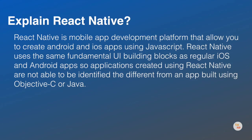Our first question is: Explain React Native. React Native is a mobile app development platform that allows you to create Android and iOS apps using JavaScript. React Native uses the same fundamental UI building blocks as regular iOS and Android apps, so applications created using React Native are not able to be identified as different from an app built using Objective-C or Java. React Native combines the best parts of native development with React, a best-in-class JavaScript library for building user interfaces.